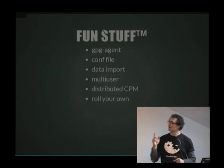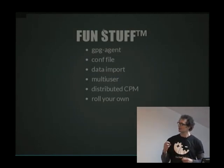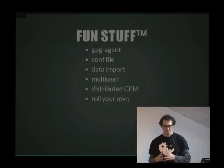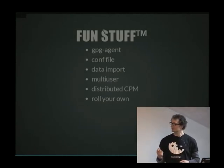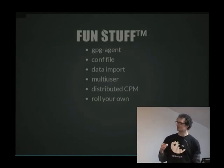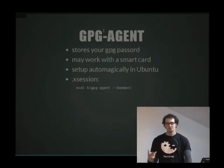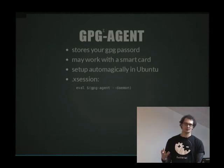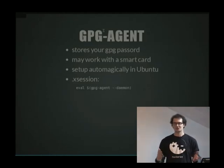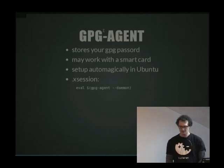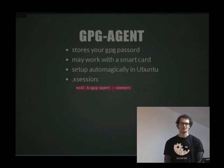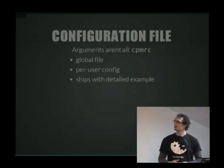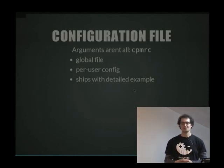Onto the fun stuff: GPG agent, configuration file, data import, multi-user setup, and distributed CPM. GPG agent stores your GPG passphrase so you can use your smart card or just keep your GPG key unlocked for the duration of your session. Set it up by running 'eval gpg-agent --daemon' in your X session — Ubuntu does this automatically. The CPM config file is called .cpmrc and lives in your home folder, with a global one too. A detailed example lives in /usr/share/doc/CPM.